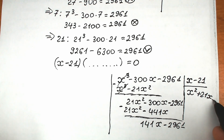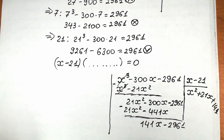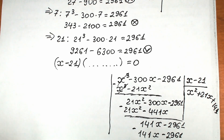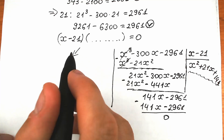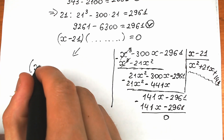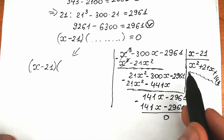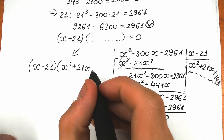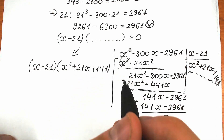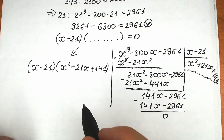Finally, we multiply by 141, giving 141x minus 2,961, which cancels out completely. So we complete the division. We now have our two parentheses: x minus 21 times x squared plus 21x plus 141 equals zero.